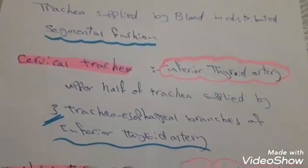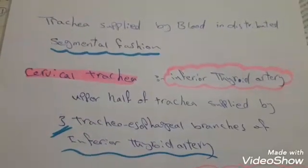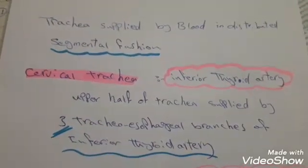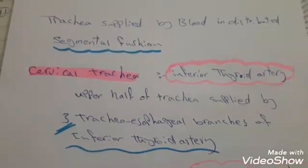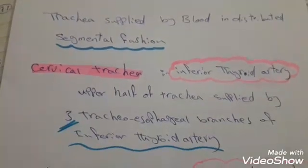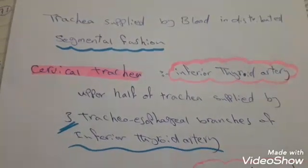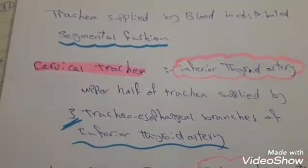The last two branches also supply the esophagus. A link to the esophageal blood supply will be in the description box.